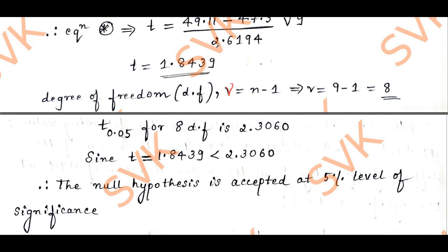The calculated T value of 1.84 is less than the table value of 2.306. Therefore, the null hypothesis is accepted at the 5 percent level of significance.